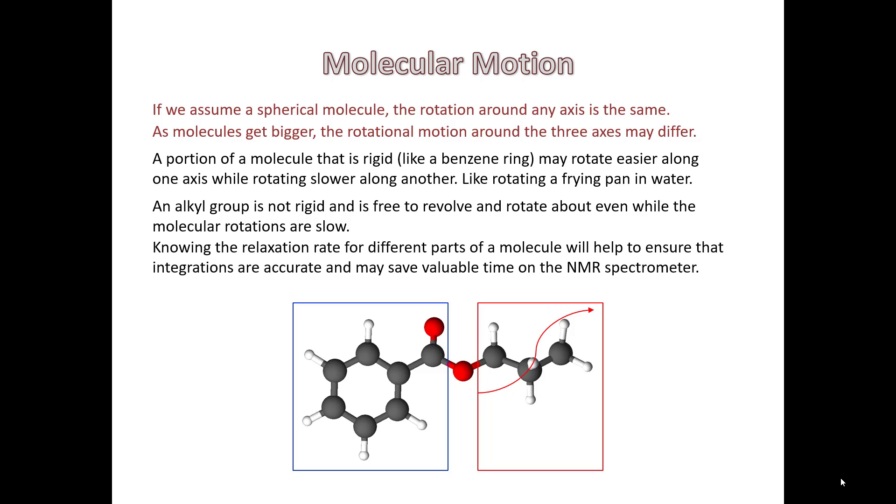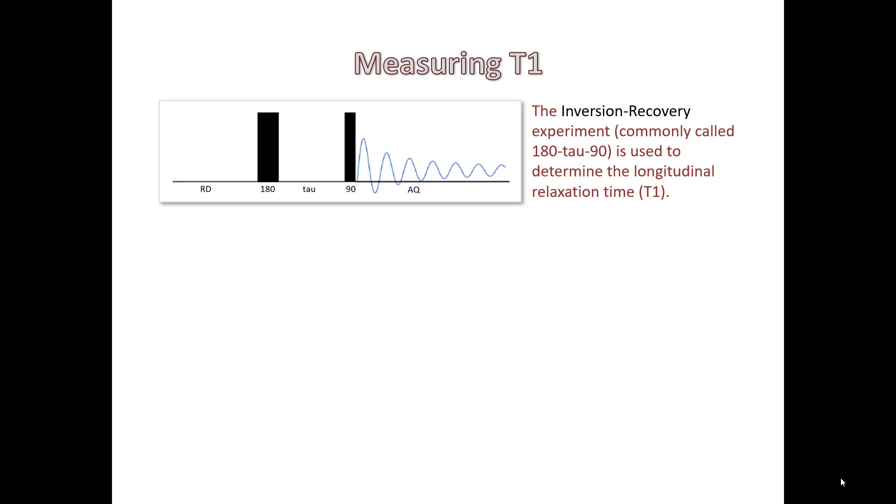Knowing the relaxation rate for different parts of a molecule will help to ensure that integrations are accurate and possibly save valuable time on the NMR spectrometer. So, how do we measure this T1? If we need to know this for an experiment to run successfully, we need to be able to get at what the T1 is for different resonances within a molecule. This experiment is called the inversion recovery experiment and commonly referred to as the 180-tau-90.